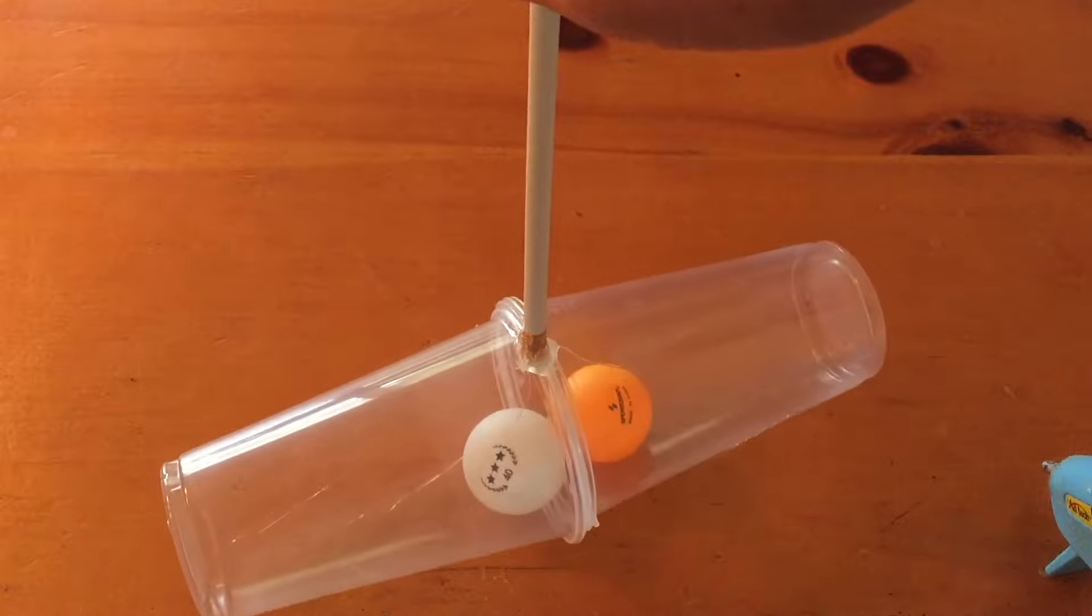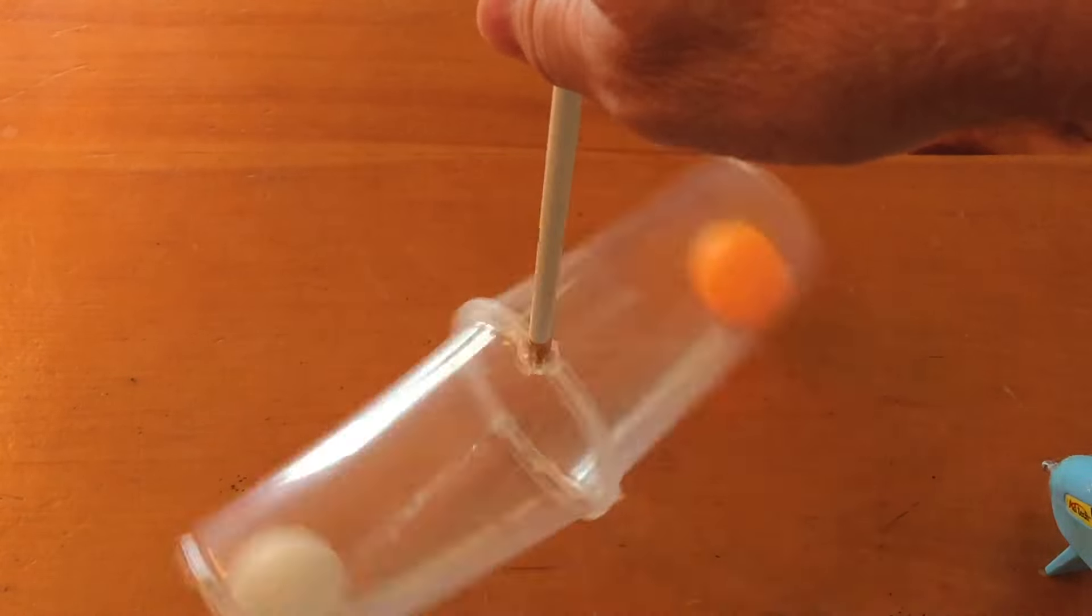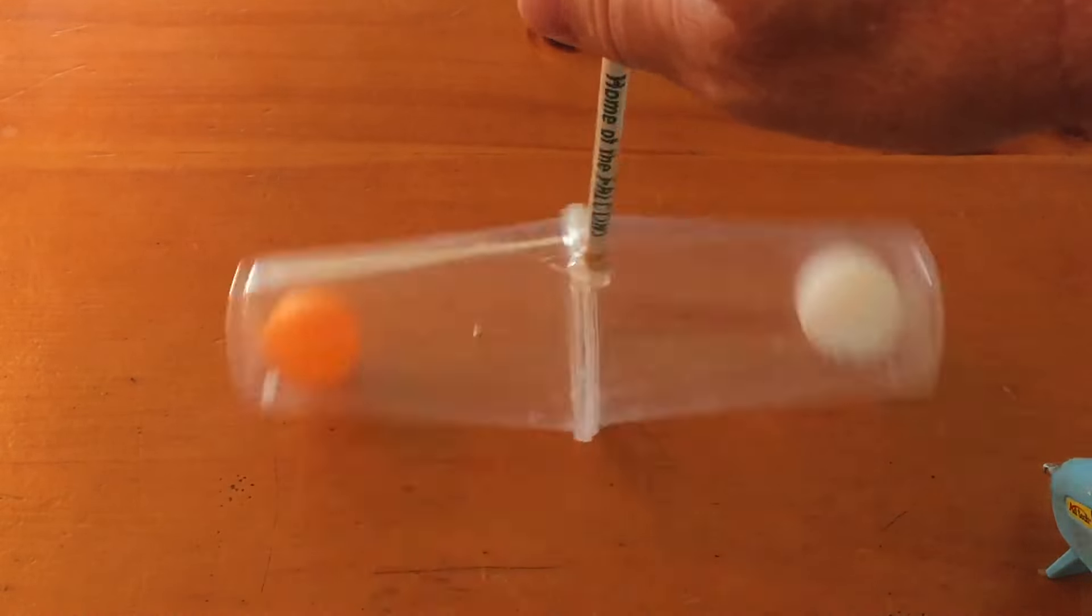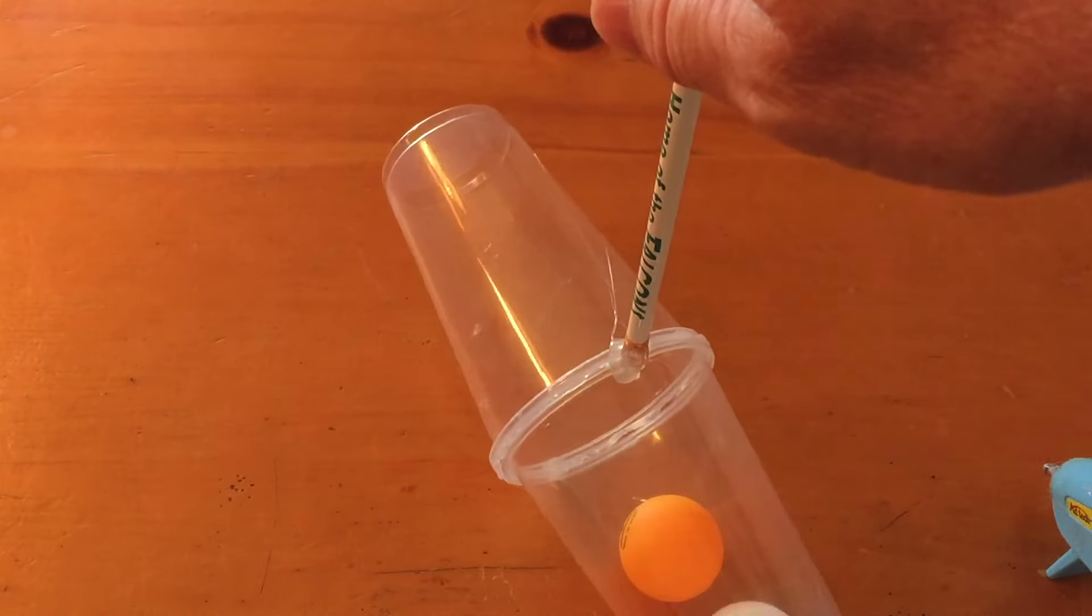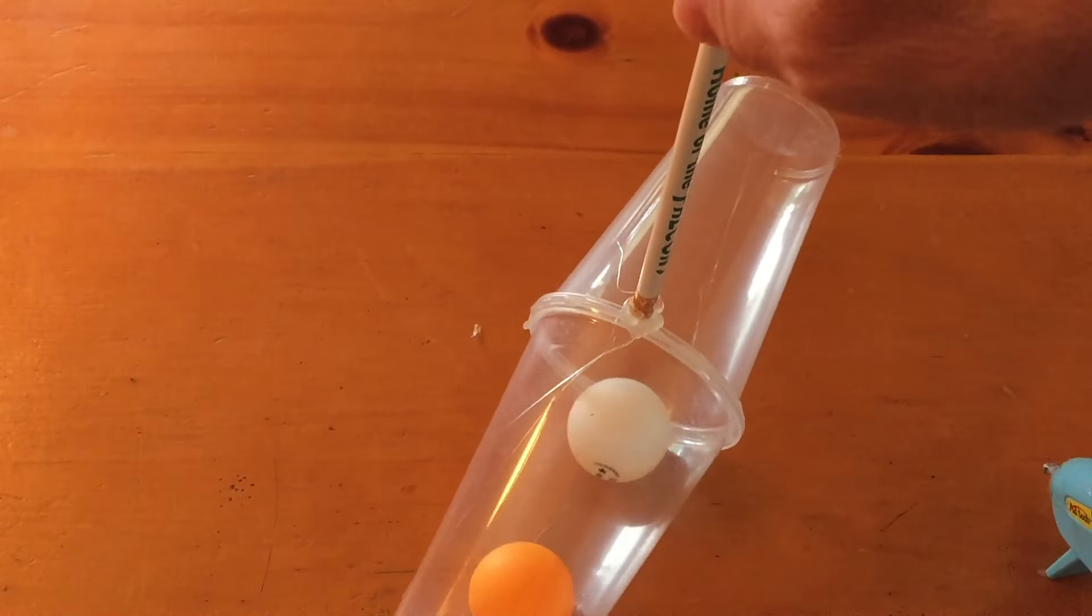Just like when you swing an object around on a string or a rope, the object will pull outward on the string. This is called the centrifugal force.